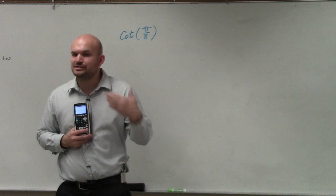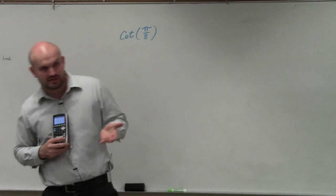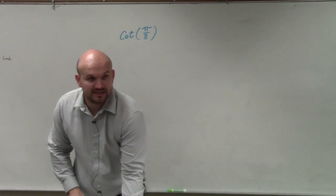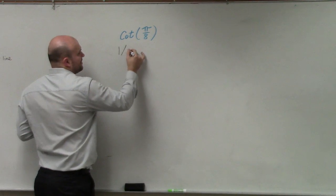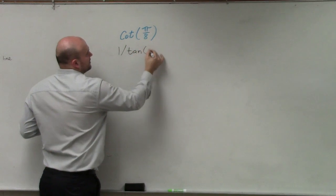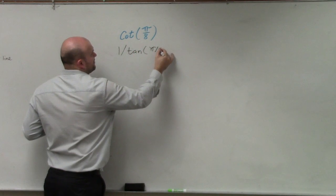But we need to understand that cotangent and tangent are reciprocals of one another. So all we simply need to do as far as entering this in our calculator is type in 1 divided by tangent of π divided by 8.